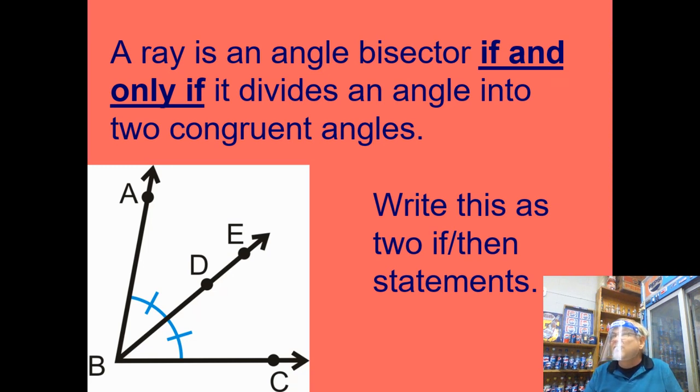You basically said that using the angle that's in the picture. And again, as long as you had if the first part, then the second, yeah, that would end up being okay. So yeah, if it divides it into two congruent angles, then it's an angle bisector. That's the other way.